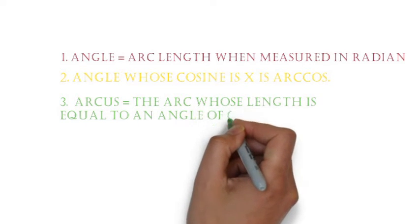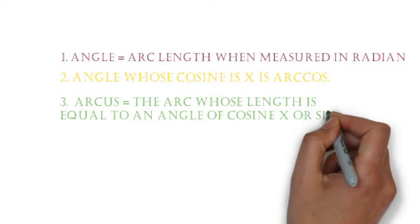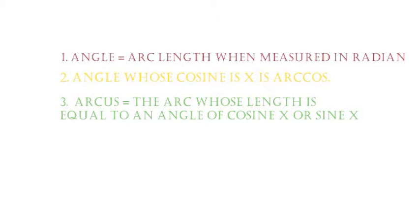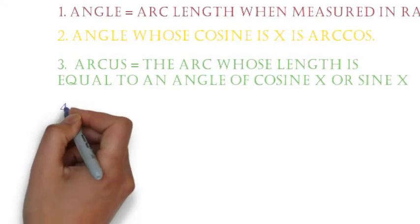Therefore, Arcus is arc, because the length of the arc of the circle in radii is the same as the measurement of the angle in radians.